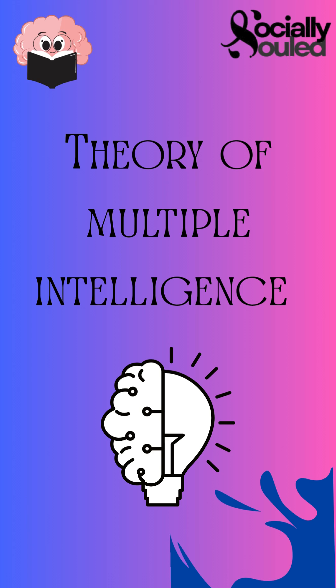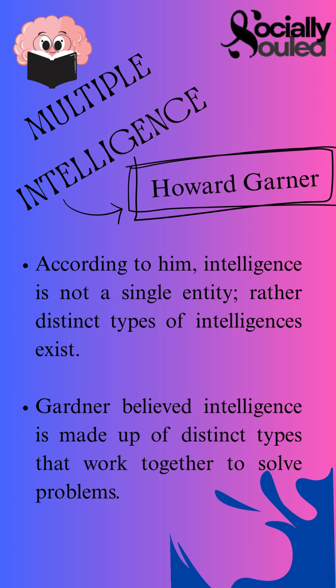Hello everyone, today we will talk about the theory of multiple intelligences proposed by Howard Gardner. When we think of intelligence, we often associate it with IQ tests or academic performance. But psychologist Howard Gardner proposed a broader, more inclusive perspective. According to him, intelligence is not a single entity — it comprises multiple distinct types, each representing different ways of processing information and solving problems.